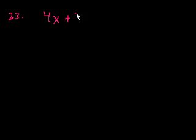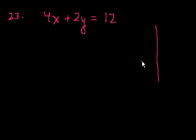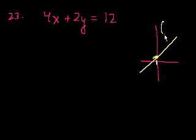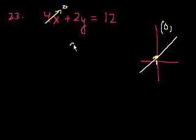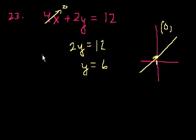Problem 23. What is the y-intercept of the graph? They say 4x plus 2y is equal to 12. The y-intercept is when it intersects the y-axis — that's the y-coordinate when x is equal to 0. So the easiest thing to do is say, when x is equal to 0, what is y? 4 times 0 is 0, so you get 2y is equal to 12, and y is equal to 6. That's choice C.